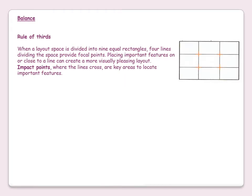Rule of thirds. When a layout space is divided into nine equal rectangles, four lines dividing the space provide focal points. Placing important features on or close to a line can create a more visually pleasing layout. Impact points where the lines cross are key areas to locate important features.